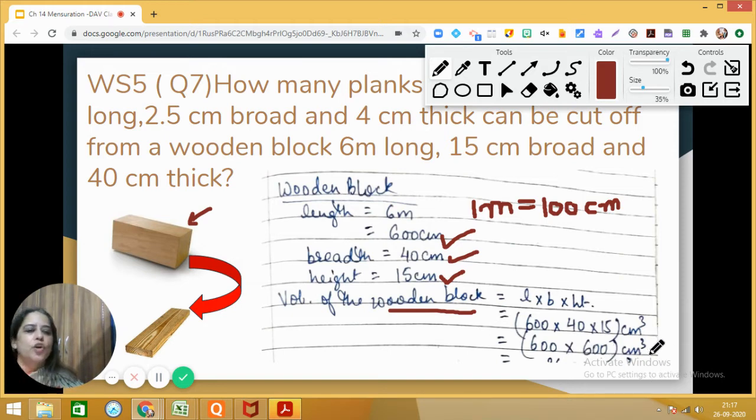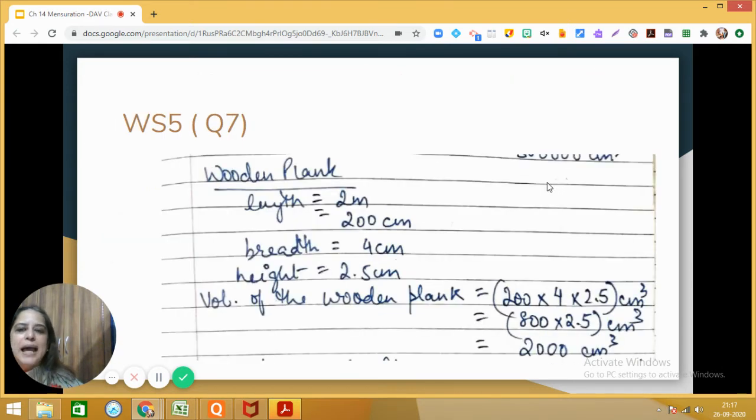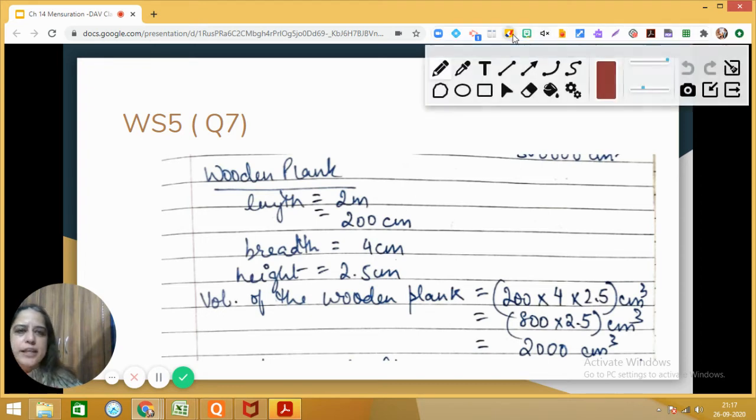Yes, 36 followed by four zeros, perfectly fine. Okay, so let us move on to the dimension of this wooden plank. Wooden plank has dimension: length 2 meters, so we are going to convert it into centimeters.